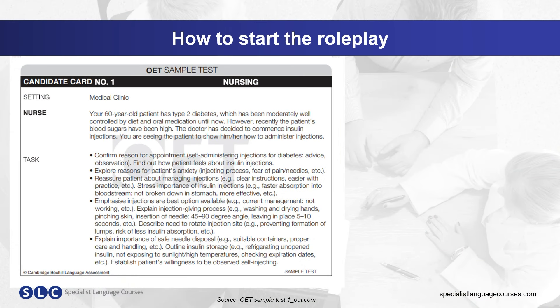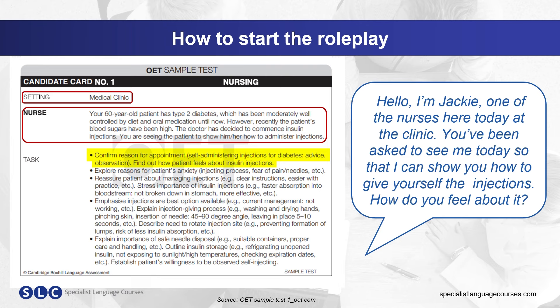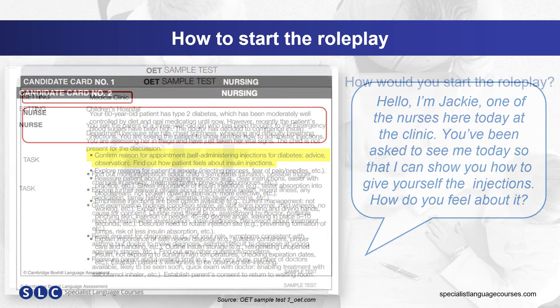Let's take a look at that in action. Look at this role card — the setting is a medical clinic. Here is the information about the patient who is about to start insulin injections, and you are there to explain this to the patient. If we look at the first task, we know we need to confirm the reason for the visit and find out how they feel about it. So we could say: 'Hello, I'm Jackie, one of the nurses here today at the clinic. You've been asked to see me today so that I can show you how to give yourself the injections. How do you feel about it?' Now look at this next task — how would you start the role play? Pause the video and let me know in the comments below.